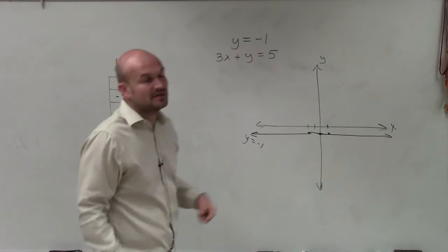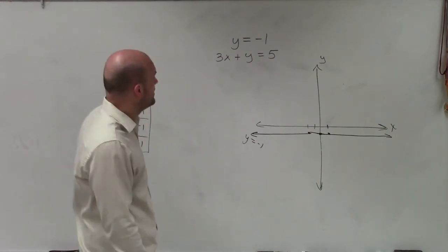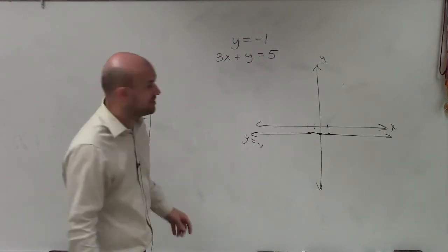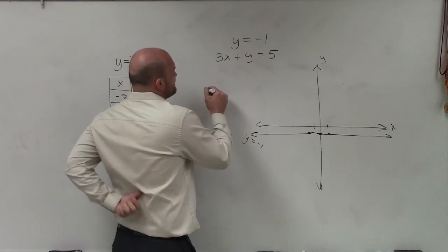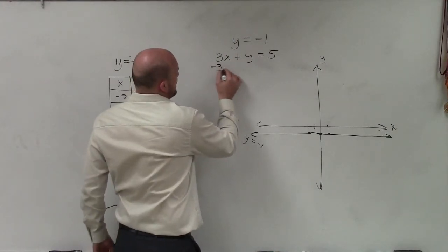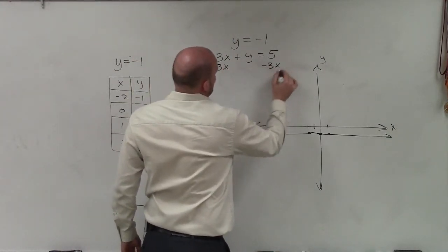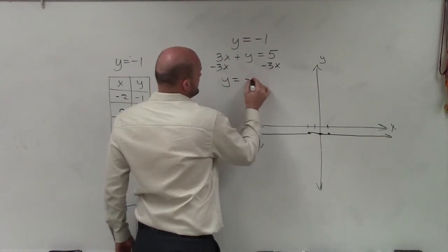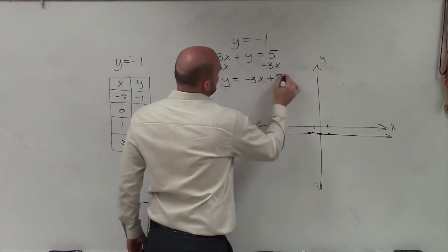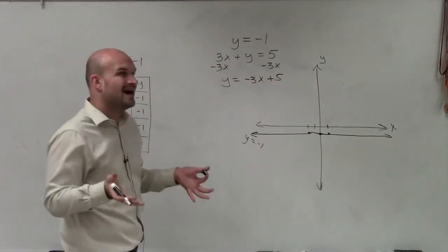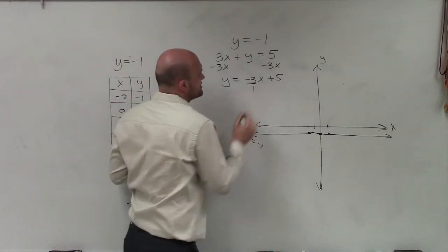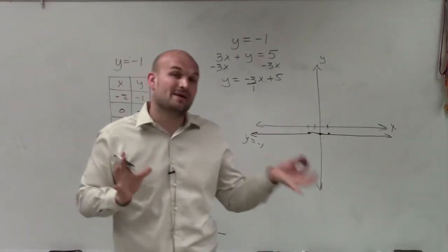Now for this example, I'm going to graph this using slope-intercept form. So what I'll do here is I will subtract 3x on both sides. And therefore, I have y equals negative 3x plus 5. Now in graphing slope-intercept form, I like to go ahead and put my slope as a fraction.